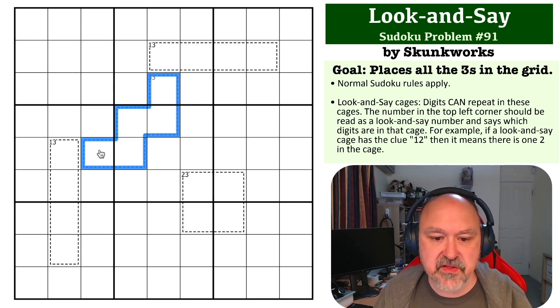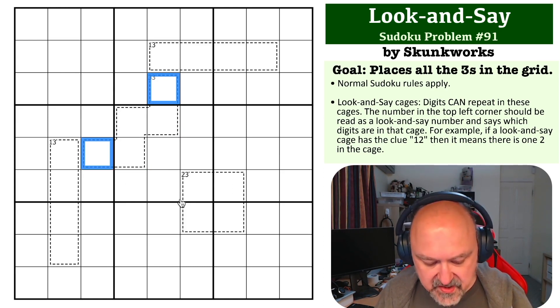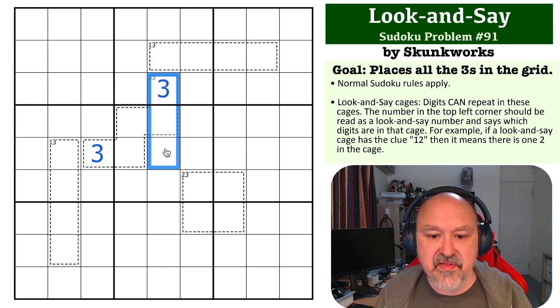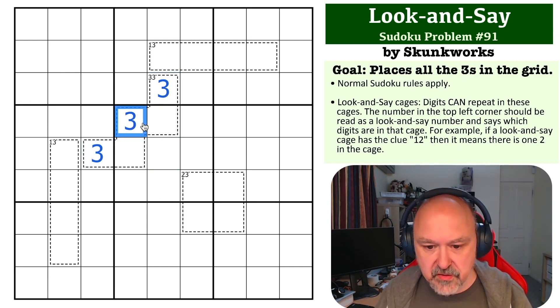is this 3-3 cage must contain three 3s. Now, the 3-3s, this cage spans over three boxes, and you cannot repeat digits in boxes. So these two here must be 3s, because they're the only cells in two of the boxes, and now these two cells are seen by 3s, so this becomes the third 3.